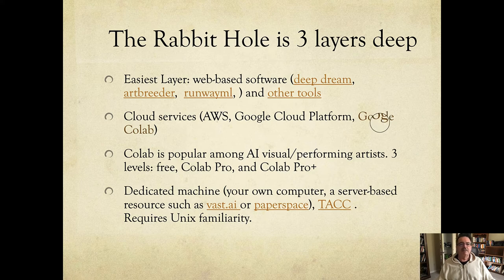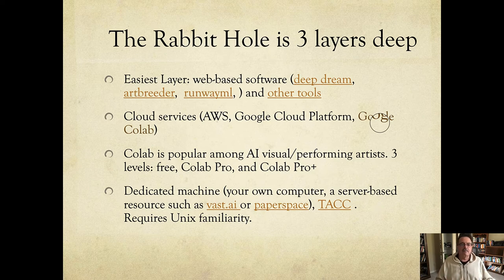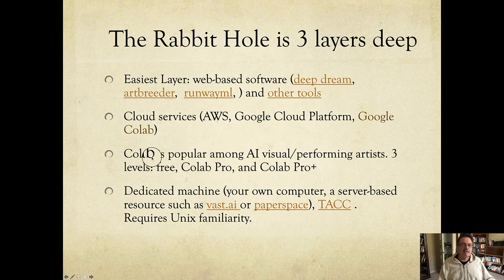Google Colab uses a Jupyter notebook style interface, which is nice because everything is in Python or Unix shell script. The notebook is a great way of organizing information — in addition to markdown or text, you can add comments and write about what your code is doing. I would say it's hands down almost the number one software platform.